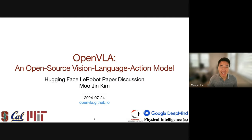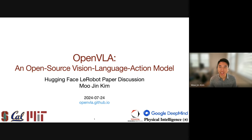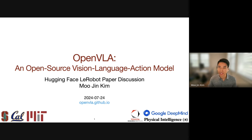Hi everyone. My name is Mujin. I'm a first-year CS PhD student at Stanford. Today I'll be presenting a project that we recently released called OpenVLA, an open-source vision language action model. This was a big collaboration with folks from Stanford, Berkeley, and MIT, as well as Toyota Research Institute, Google DeepMind, and Physical Intelligence.